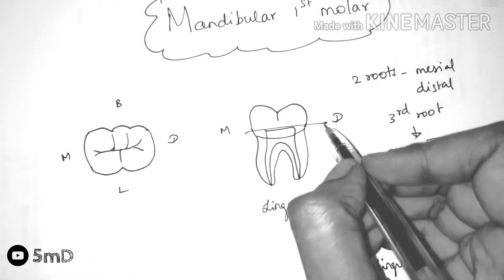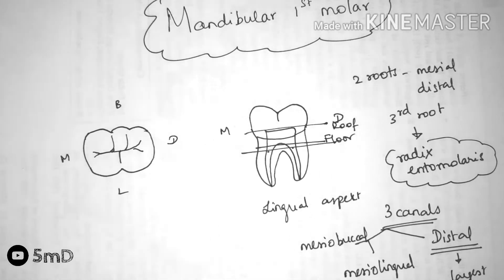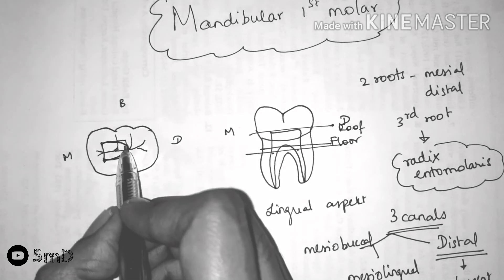The roof of the pulp chamber is located in the cervical third of the crown and floor in the cervical third of the root. The axis cavity can be either rectangular or trapezoidal depending on the location of canal orifices.